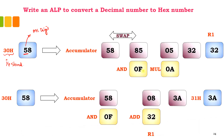I am masking it with 0F, so the result of this will be 05. Then I need to multiply it with 0A — that will complete the MS digit multiplied with 0A part of the equation. The result of this multiplication will be 32.